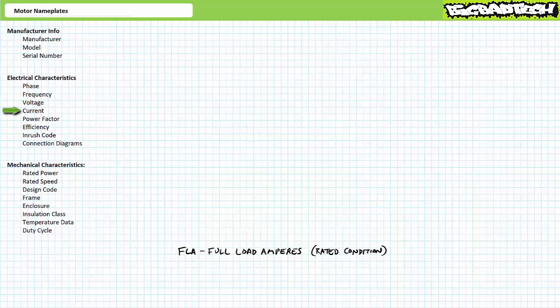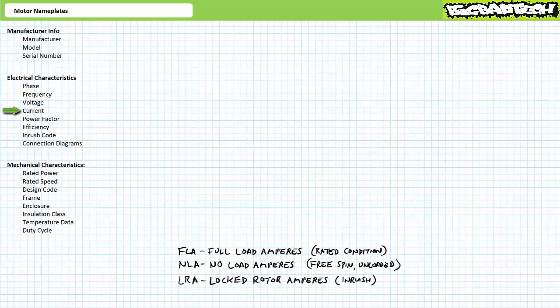Some motor nameplates include accessory current information. NLA, or no-load amps, is the current drawn while the motor is free spinning and experiences no oppositional torque. LRA, or locked rotor amperes, is the inrush current drawn when the motor is first started from a standstill or locked rotor condition. Inrush current is many times that of rated current, but thankfully it's relatively brief. We'll examine the inrush code in a moment, which can be used to calculate inrush current.